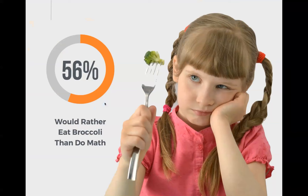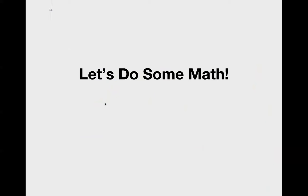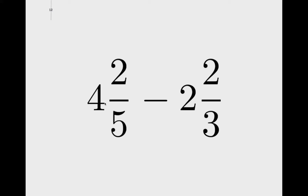As a result, we live in a world where 56% of kids would rather eat broccoli than do math. If math can't beat out broccoli, we know we're doing something wrong. So let's do some math — I don't like to talk for too long without letting you do some mathematics. Get some pencil and paper. I'd like you to do four and two-fifths minus two and two-thirds. I'll give you 30 seconds.